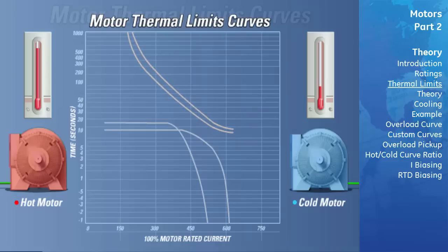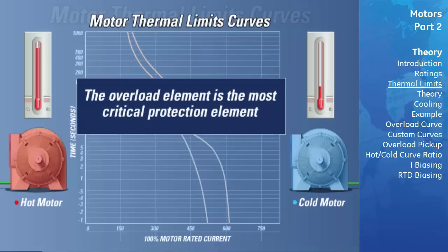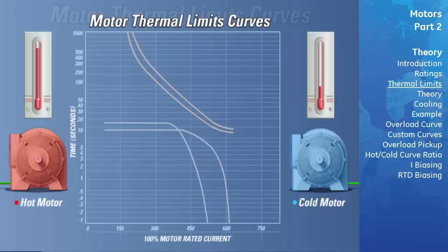The relay's overload element is the main protection element and is the most critical to motor protection. It is always active and cannot be shut off. Motor data sheets should be supplied with every motor. Part of this data should be a thermal limit or thermal damage curve, which indicates the amount of time a specific amount of current can be supplied to the motor without damaging it.